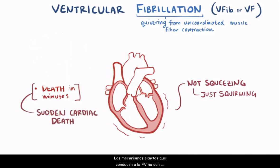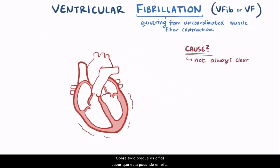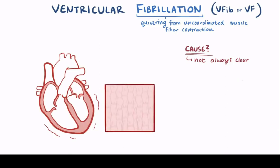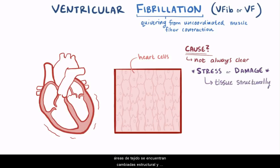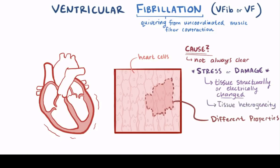called sudden cardiac death. Now the exact mechanisms leading up to VF aren't always super clear, mostly because it's hard to know what's happening in the heart immediately before VF. Most often though, the heart cells become stressed or damaged in such a way that different areas of tissue are structurally and electrically changed and have different properties. This is known as tissue heterogeneity.